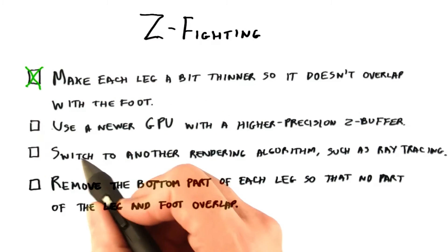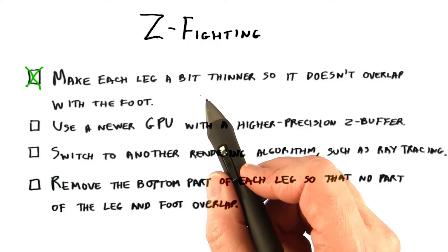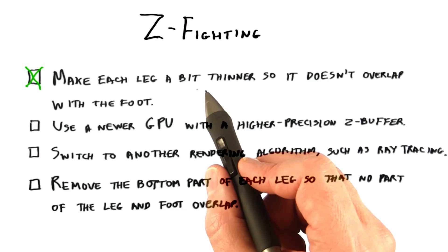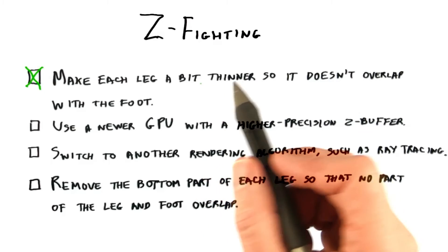The first solution is acceptable for the most part. It solves the problem of two surfaces being in the same location. However, it does change the geometry of the model, which might not be acceptable.